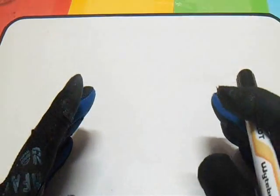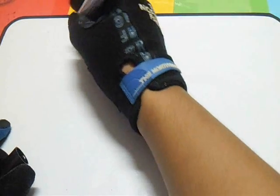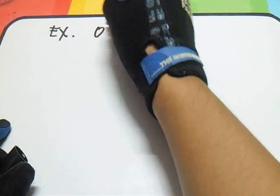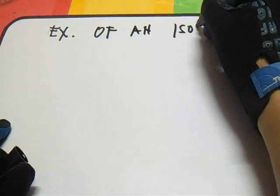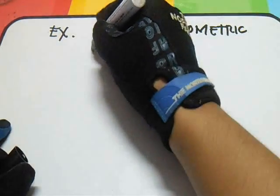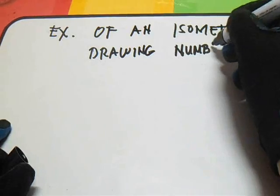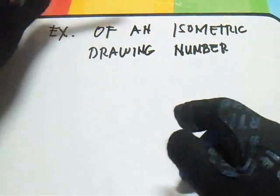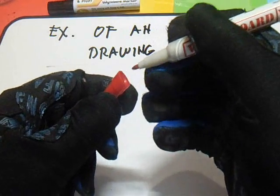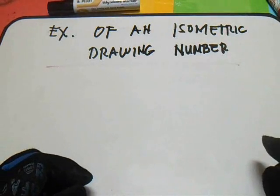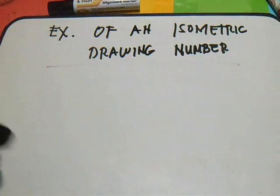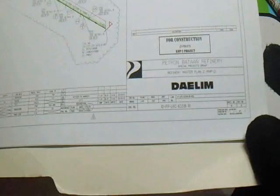Hi, welcome and thanks for watching and subscribing. Now we're going to show you the example of an isometric drawing number. This is a very important drawing number in the isometric, so I'll show you the example of the drawing number in the isometric. If you see this one here, this is the example of a drawing number.